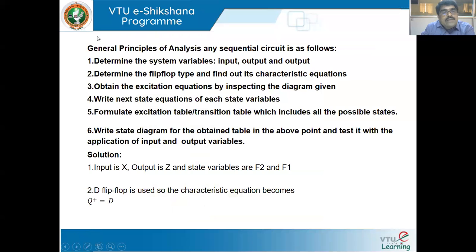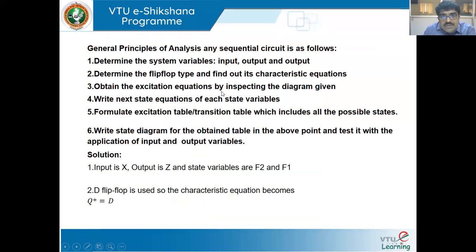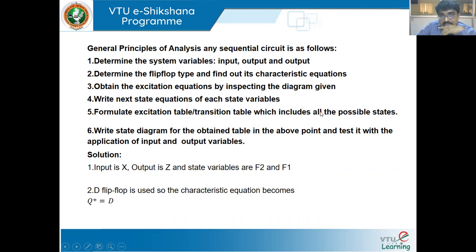The general principles for analyzing any sequential circuit are: first, determine the system variables — input, output, and state variables. Second, determine the flip-flop type and find its characteristic equation. Third, obtain the excitation equations by inspecting the diagram. Fourth, write the next state equation for each state variable. Fifth, formulate the excitation and transition table for all possible states. Sixth, write the state diagram from the obtained table.